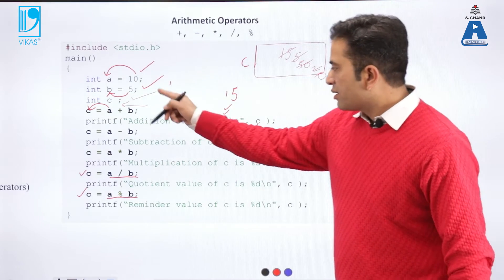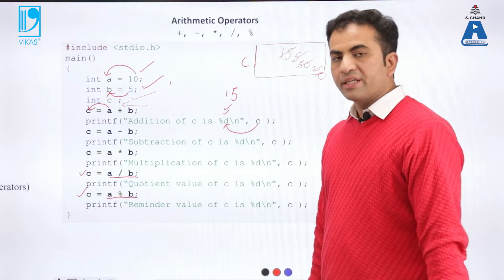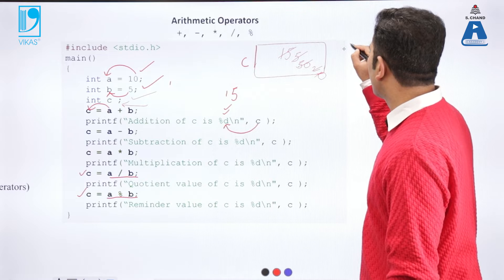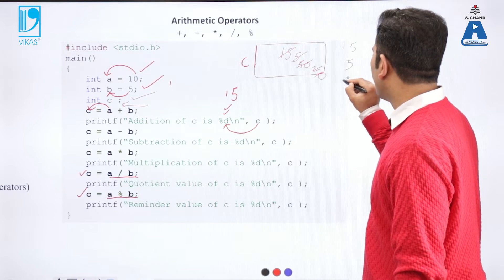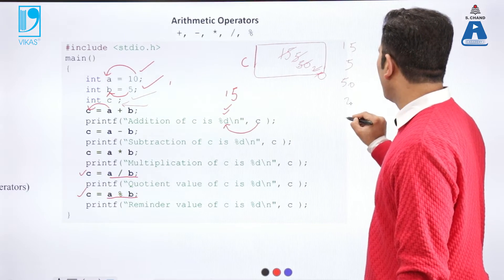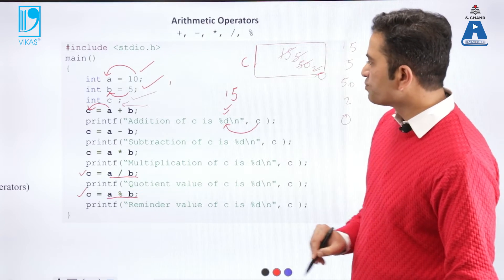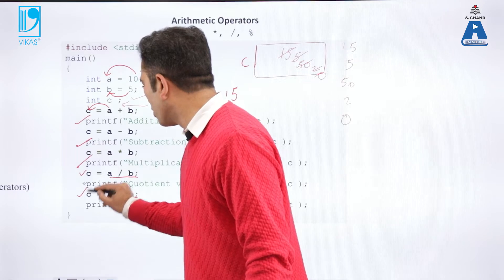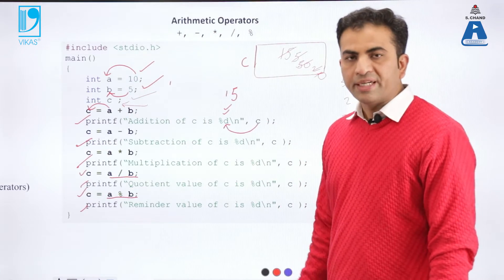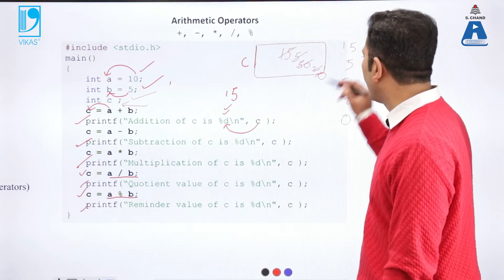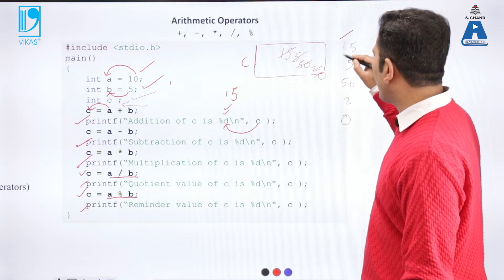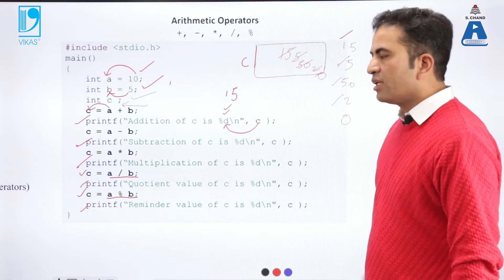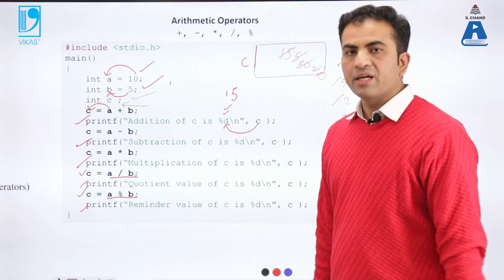The output screen gives us: the first statement gives 15, then 5, then 50, then 2, and then 0. Because there are 5 printf statements, every printf statement will print the values 15, 5, 50, 2, and 0. This is all about the arithmetic operators.